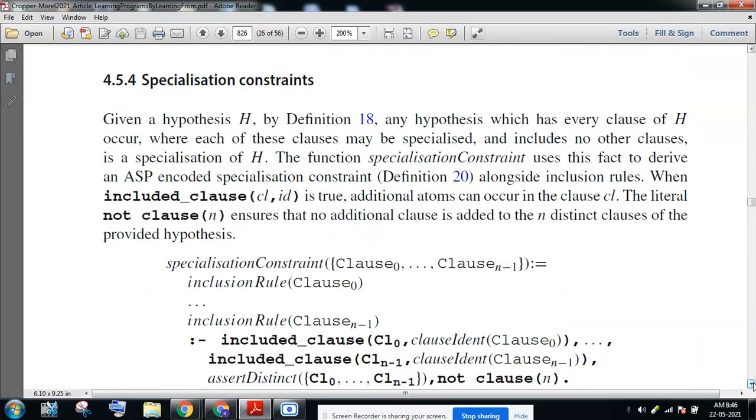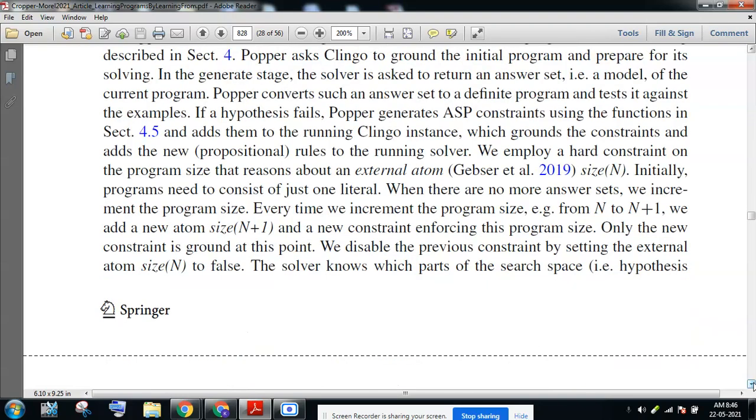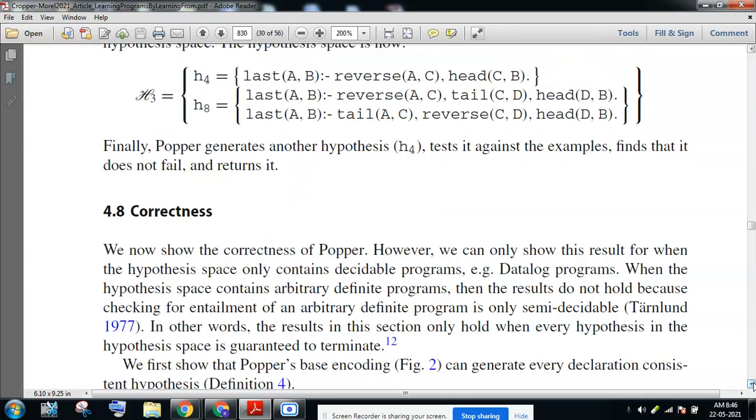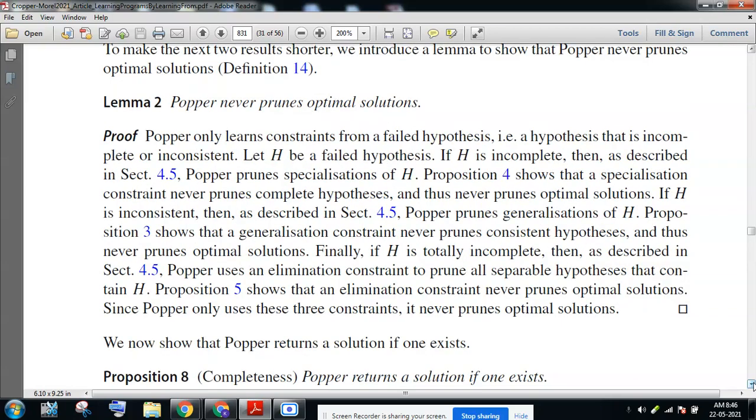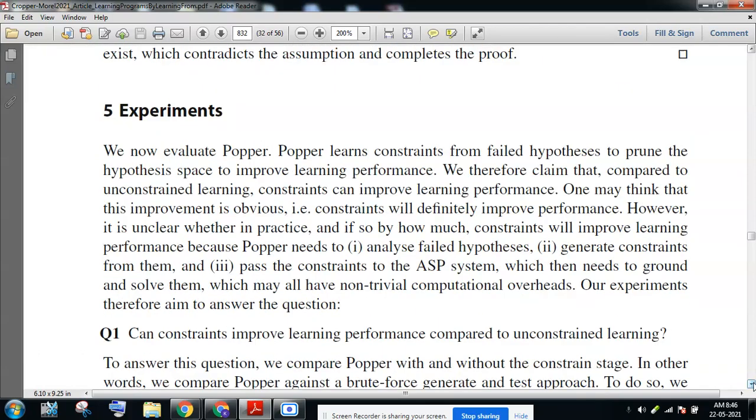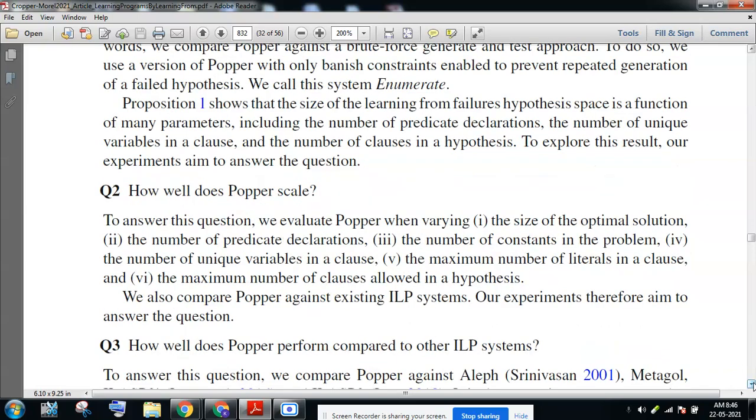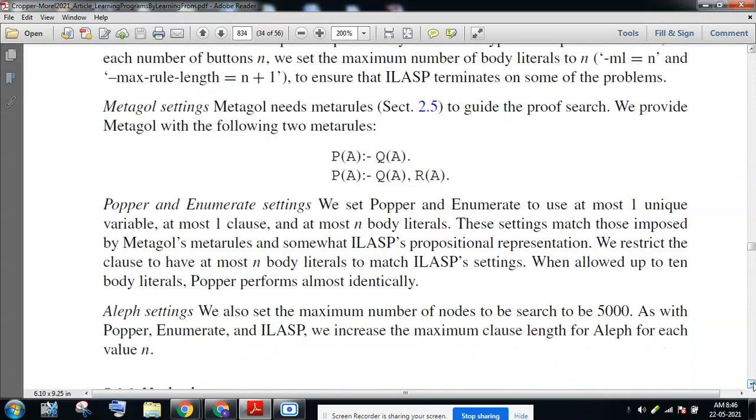So much things are given here. Let me just imagine how good this paper is. And what for example is Correctness was proposed by using the Lemma and its proofs. And the fifth section goes for the experiments. Under experiments they have given questions here. Can constraints improve learning performance compared to unconstrained learning? How well does Popper scale? How well does Popper perform compared to other ILP systems?